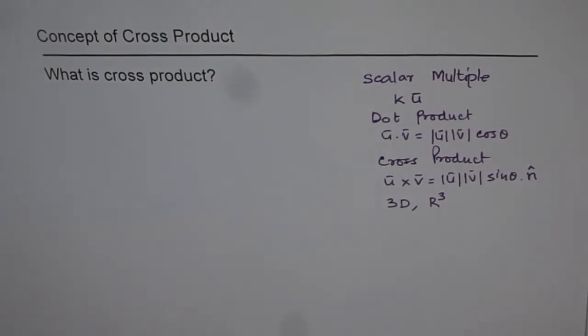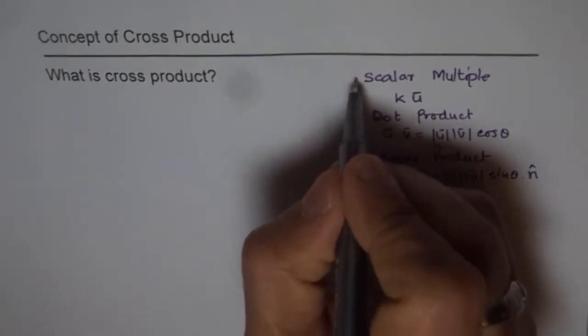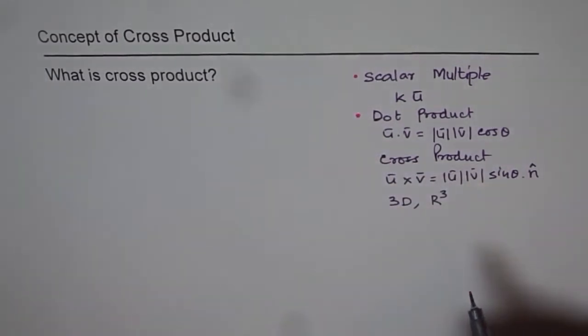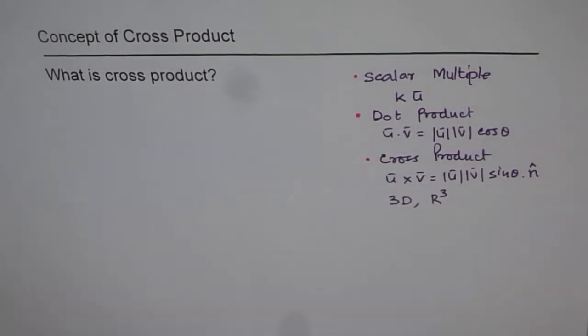Cross product is always in 3D or R3 space. This is what is very unique about cross product. You cannot do cross product in 2D. The other two which we have talked about, scalar multiple and dot product can be done in 2D but not cross product. Cross product is unique that it can be done only in 3D or R3.